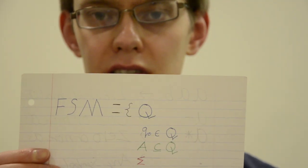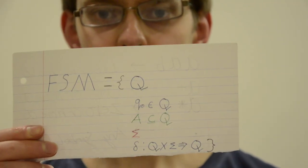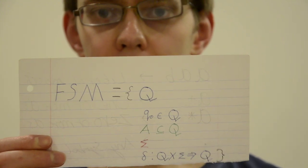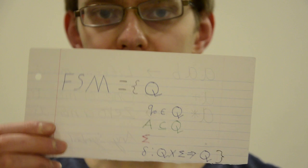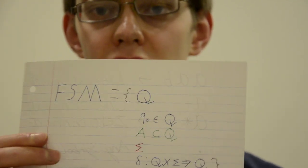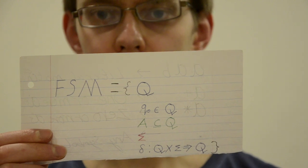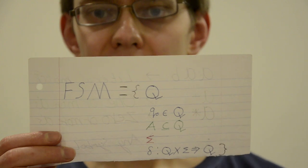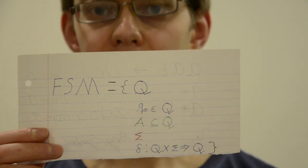Then there is the alphabet which will be of symbols, in this case characters, from which languages that the automata may accept or will attempt to accept or recognize can be built.